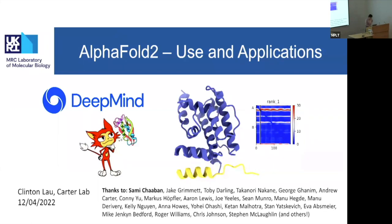I've got a few logos and diagrams here. AlphaFold was built by DeepMind, which is an offshoot of Google. This logo is from a related project called ColabFold, which is an alternative implementation of AlphaFold that we commonly use. And this is an example of a nice structure from AlphaFold — for those in the know, PA plots: blue is good, and this structure is very good.